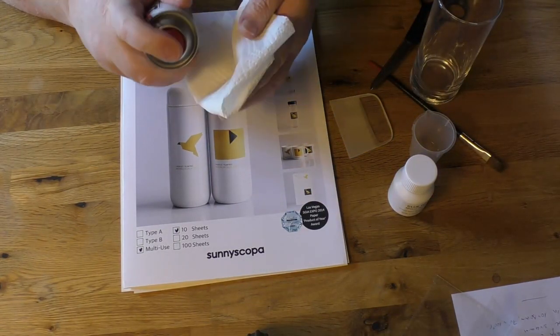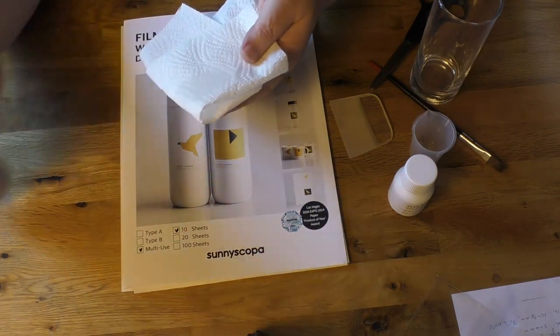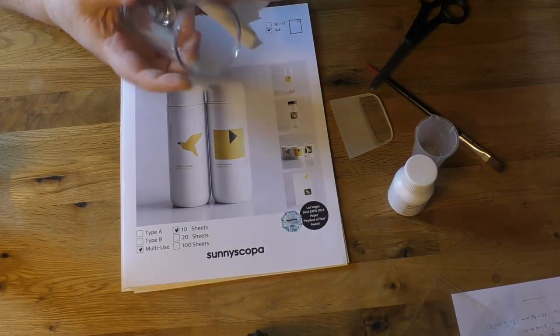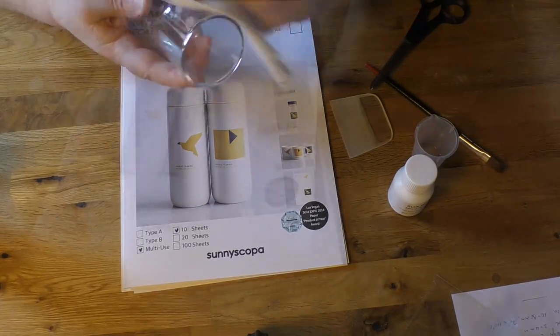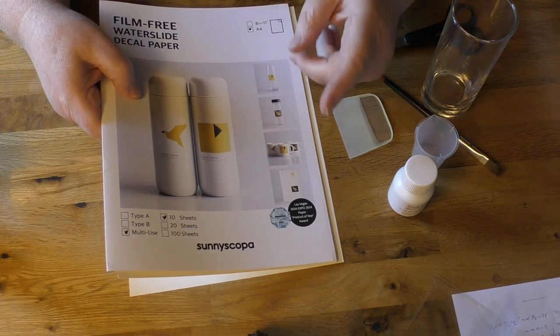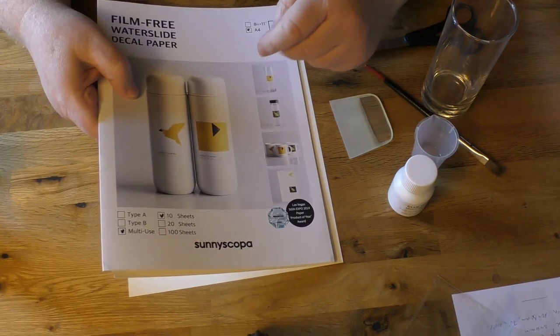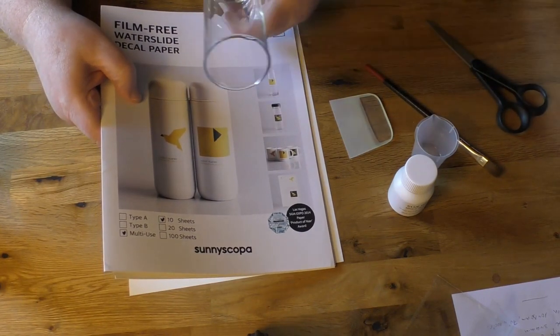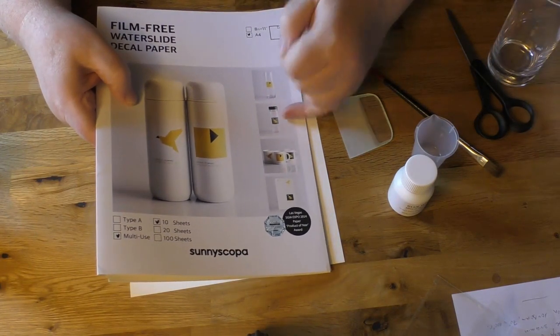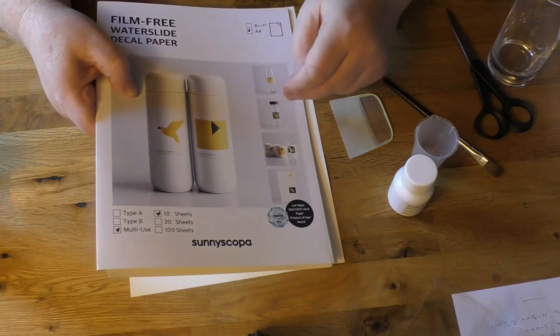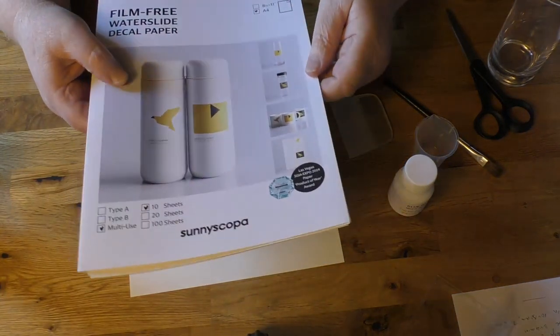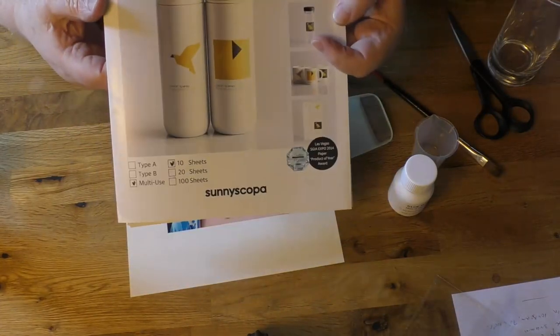There's three different types of this paper: type A, type B, and multi-use. Type A is only for shiny surfaces like glass. Type B is for non-glossy surfaces like wood and metal. Multi-use is, as the name suggests, for both, and so I got the multi-use.